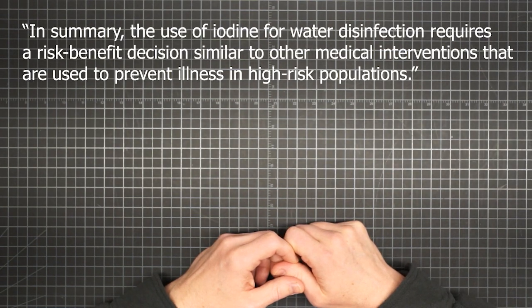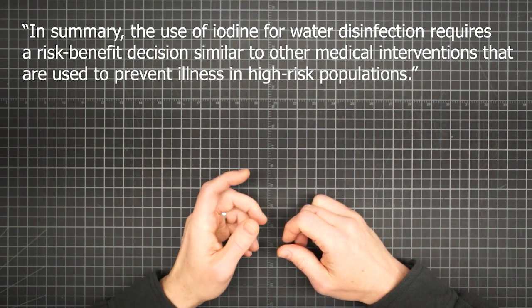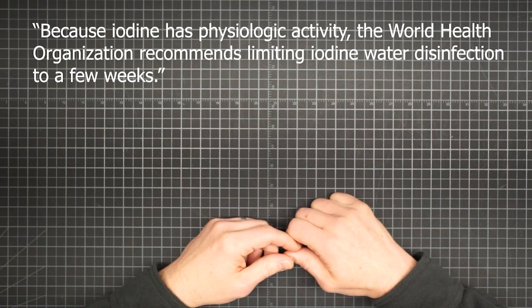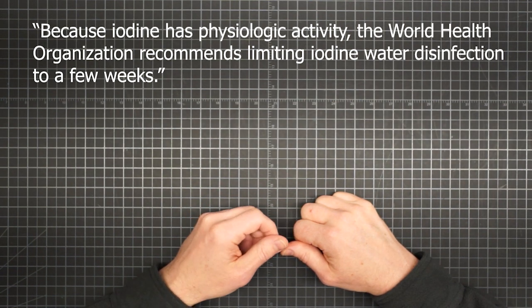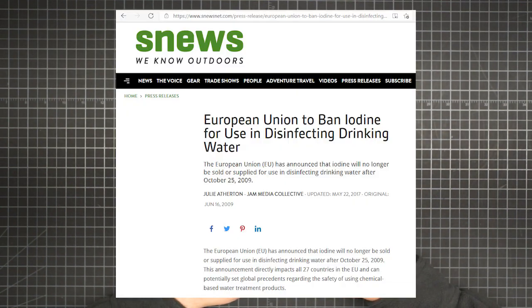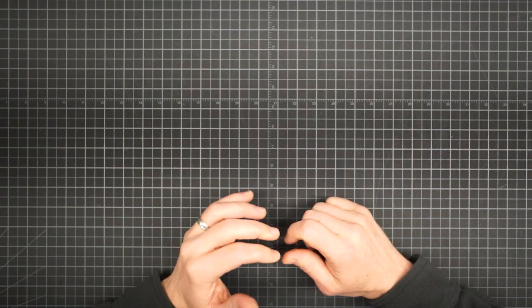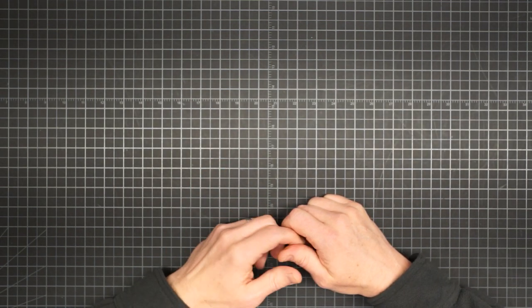In summary, the use of iodine for water disinfection requires a risk-benefit decision similar to other medical interventions that are used to prevent illness in high-risk populations. The CDC's Yellow Book Chapter 2 discusses water disinfection for travelers. Because iodine has physiologic activity, the World Health Organization recommends limiting iodine water disinfection to a few weeks. I also found reports that the European Union was going to ban iodine for use in disinfecting drinking water, and that it will no longer be sold or supplied for that purpose. But even if you are one of the majority who can tolerate higher doses, there is still the other main drawback to consider.